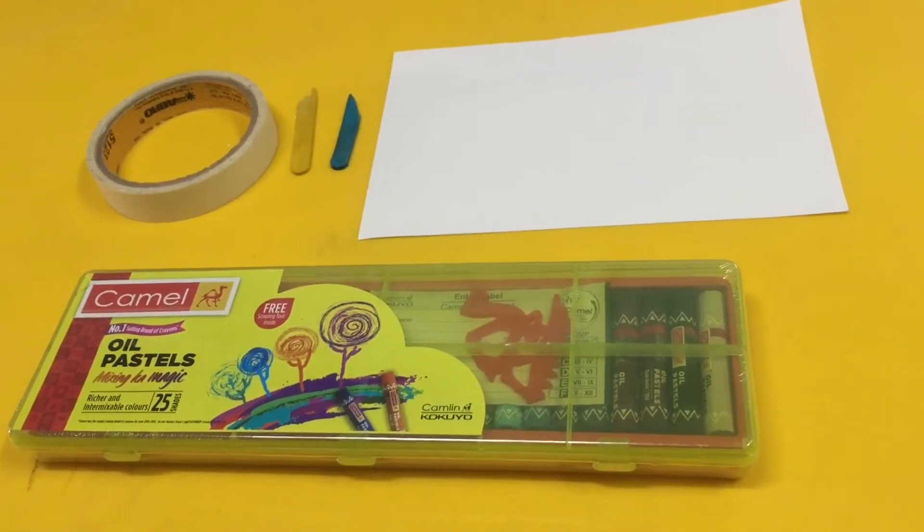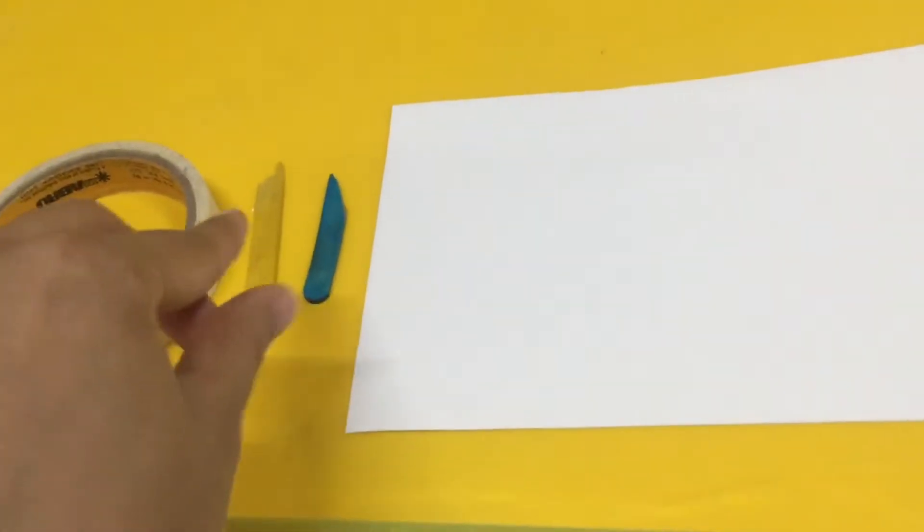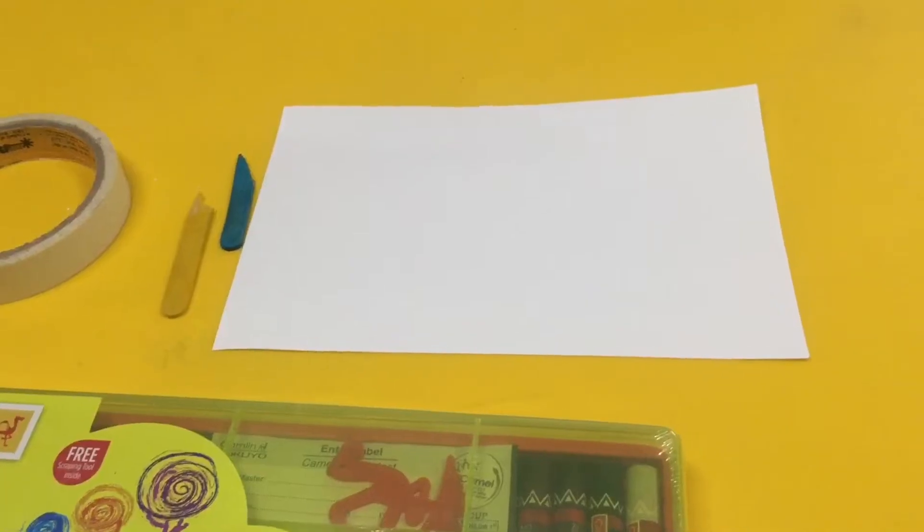For this we need pastel colors, masking tape, some sharp object - here we have a broken popsicle stick - and drawing paper.